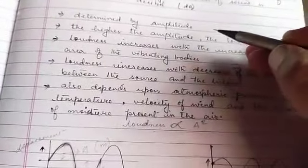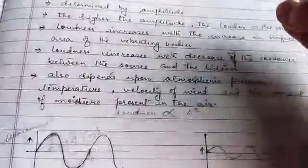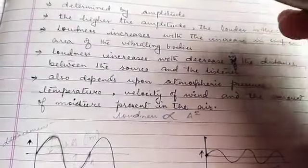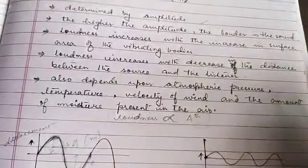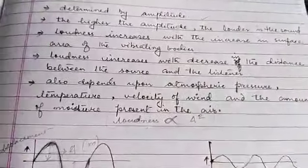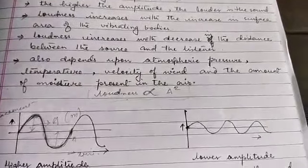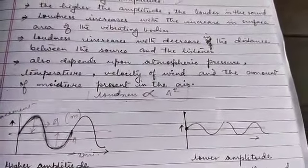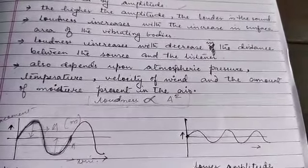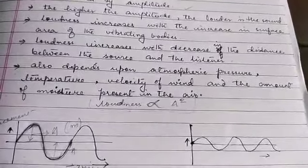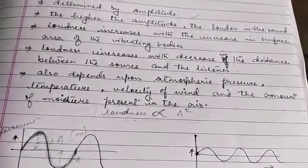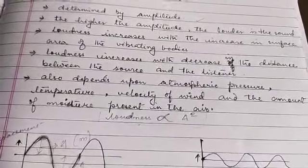The factors that affect loudness — the first one is amplitude. The higher the amplitude, the louder is the sound. Another example: you take a tuning fork and strike it with a wooden gong. If you do it softly, you will hear a soft sound. But if you hit the tuning fork hard, you will hear a louder sound.